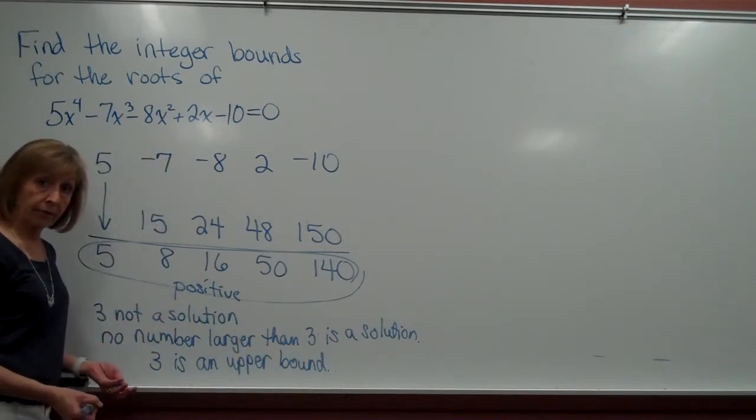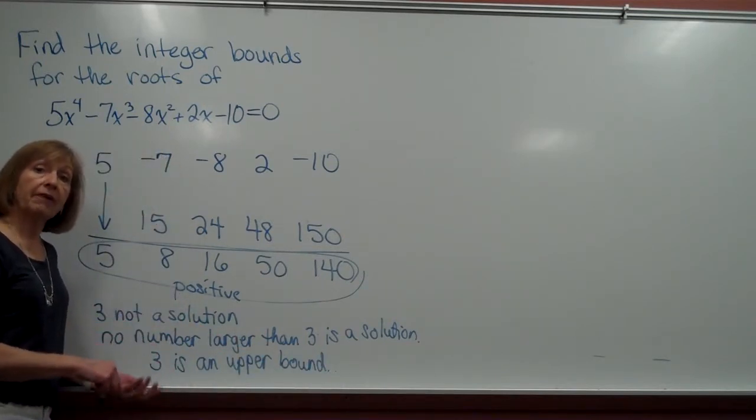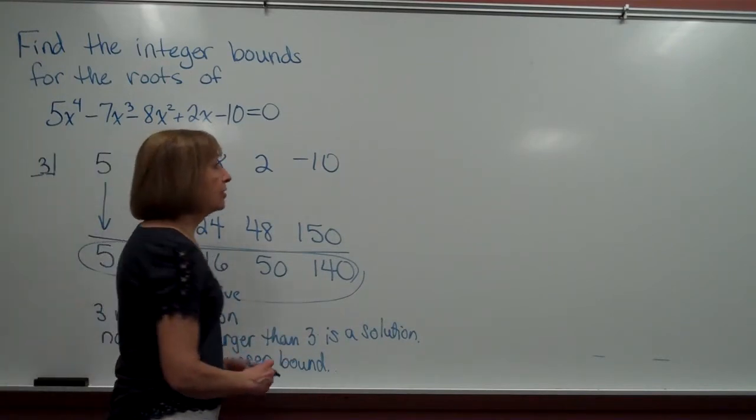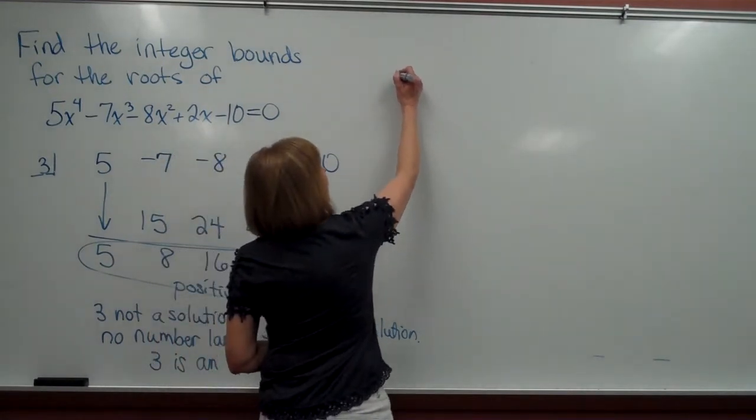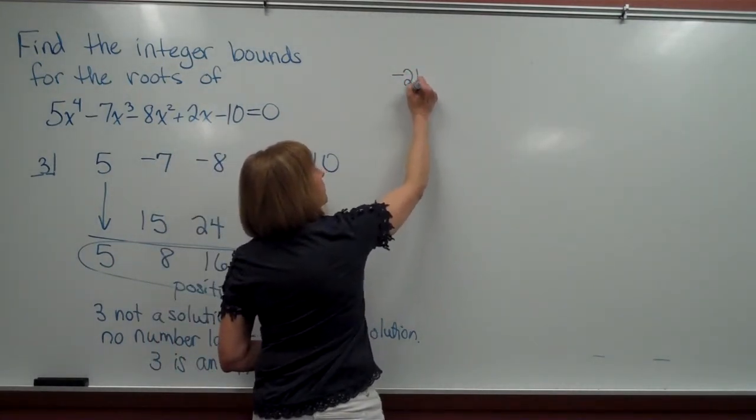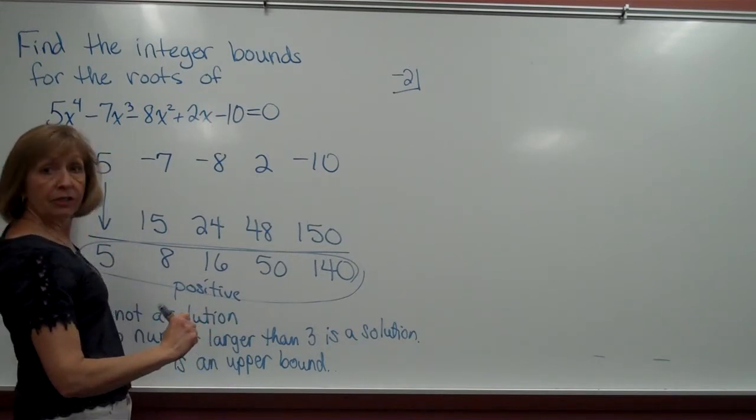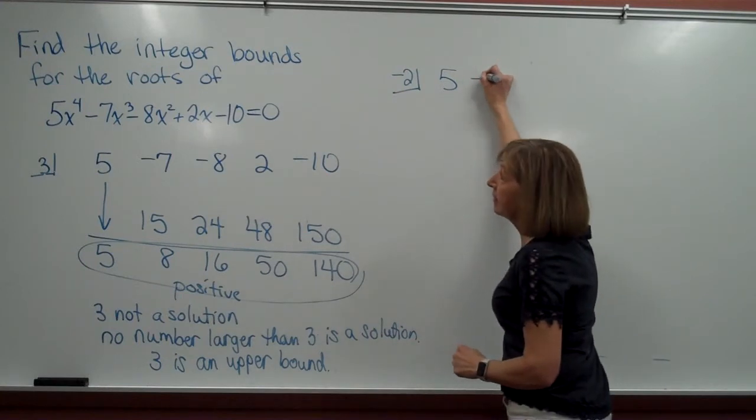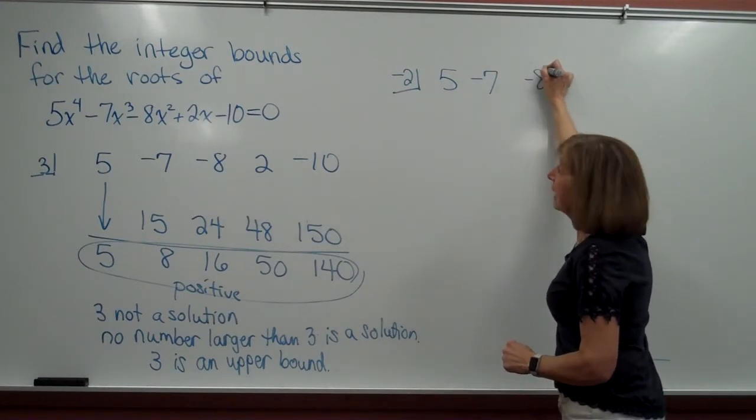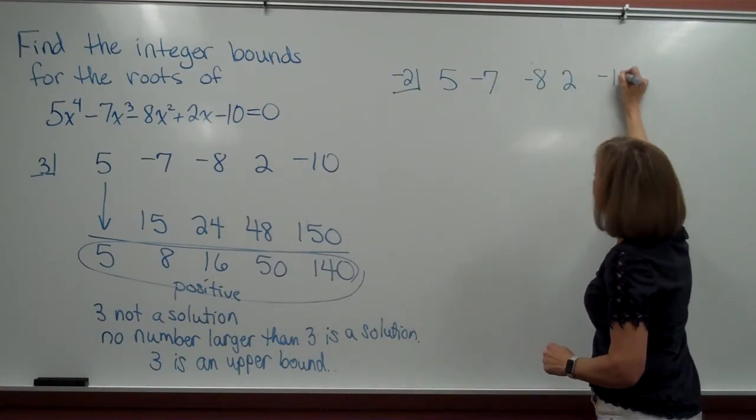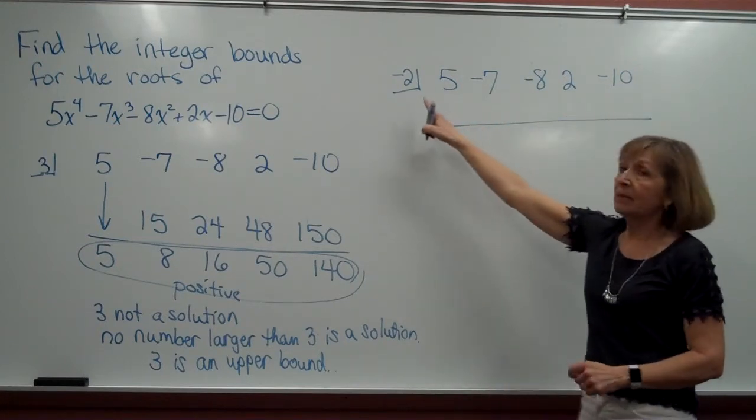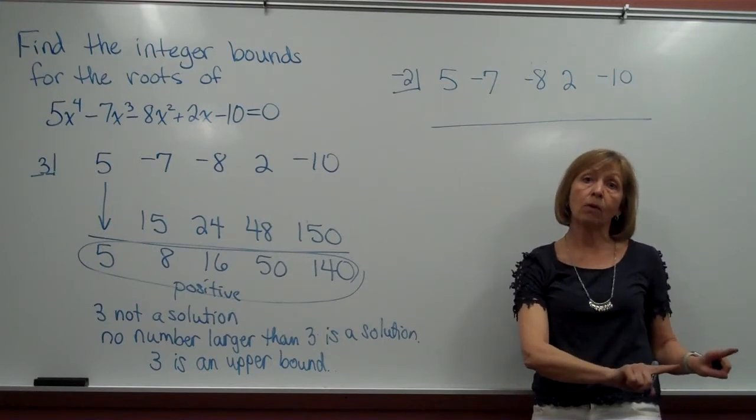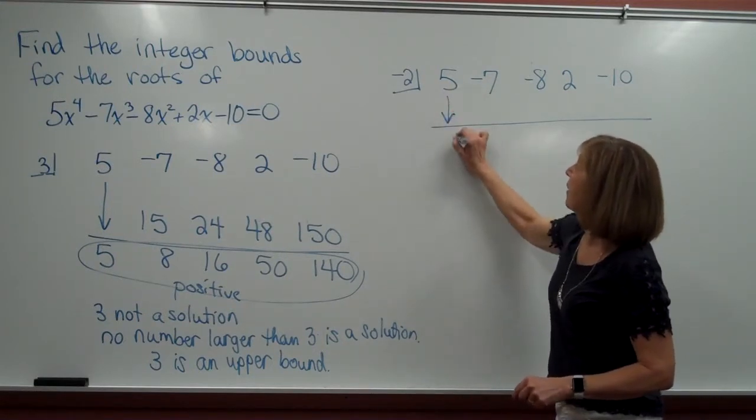Now let's try for the lower bound. That means I'm going to divide by a negative number, a negative integer. So first, let's look at dividing by negative 2. Again, I'm going to use the coefficients from the polynomial. So I have 5, negative 7, negative 8, 2, negative 10. And because I'm dividing by a negative number, I'm looking to see if the bottom row alternates in sign. So bring down the 5.